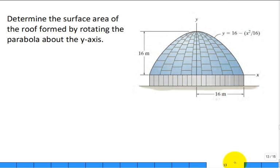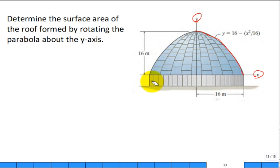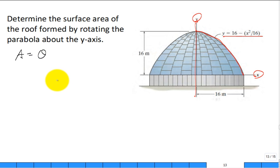Problem: determine the surface area of the roof formed by rotating a parabola about the y-axis. The wall is not part of the roof — only the shaded blue region is the roof. It's formed by revolving the red curve about the y-axis. To calculate that surface area, we need the radians of revolution, R-bar from the axis of revolution to the centroid of the generating line, and the length of that line.